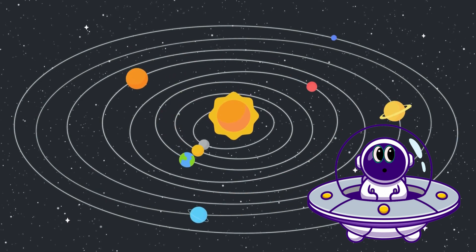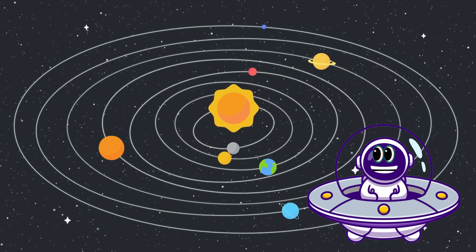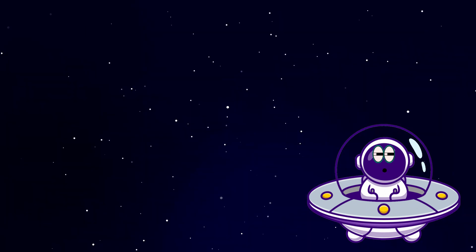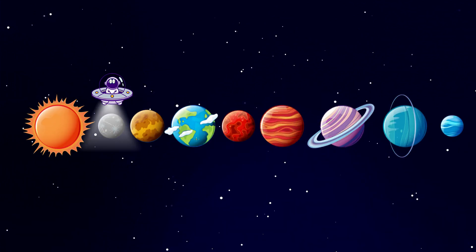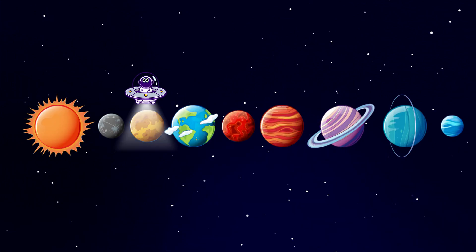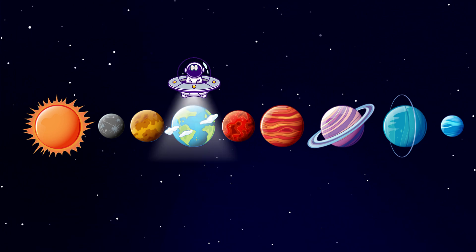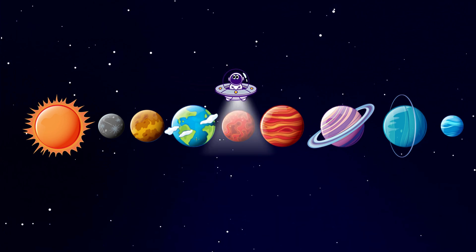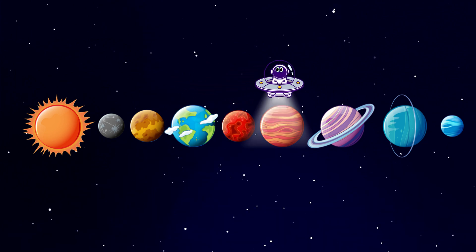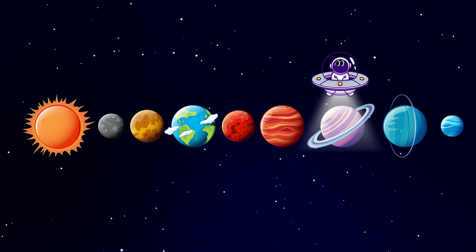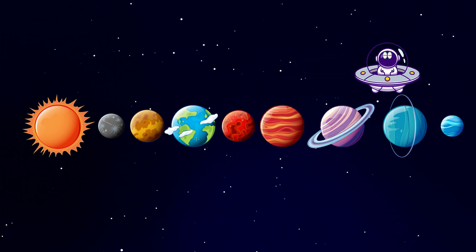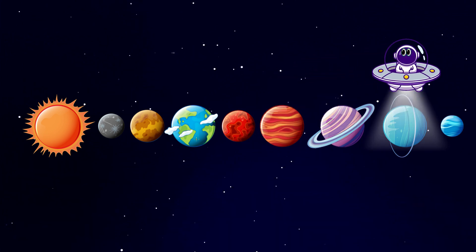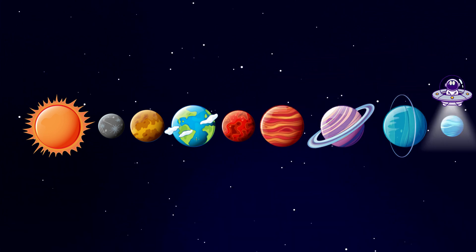Here's a list of the eight planets in order of their distance from the Sun: 1. Mercury, 2. Venus, 3. Earth, 4. Mars, 5. Jupiter, 6. Saturn, 7. Uranus, 8. Neptune.